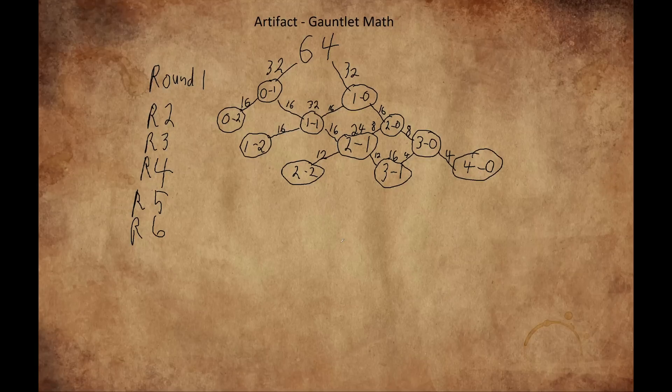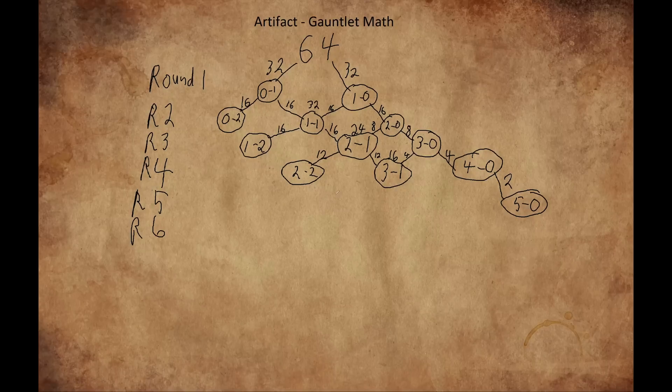Round 5, we get our first winners. 2 players exit at 5 and 0, that's probably me and you, right? 8 players exit at 3 and 2, and 10 keep playing at 4 and 1.